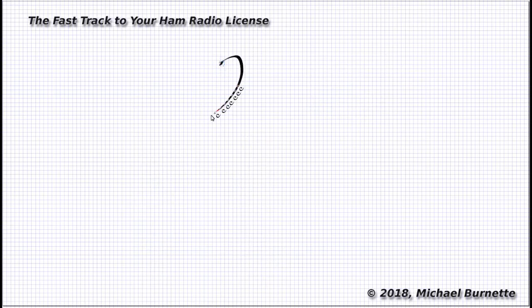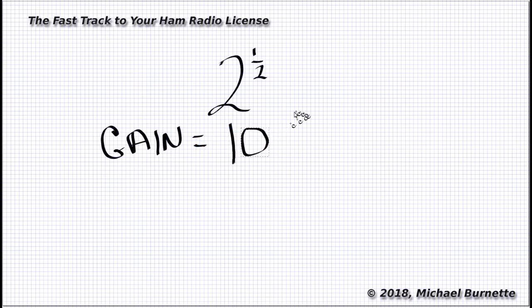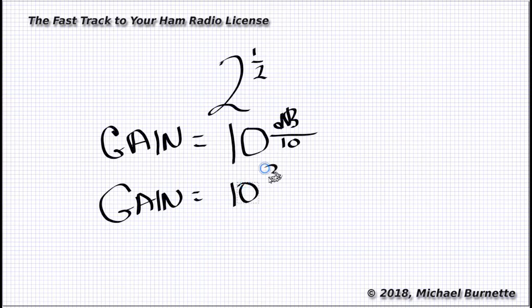Exponents can even be fractions. We often use those when we're working with decibels, for instance. Here's a calculation that shows the gain produced by a 3 dB increase in signal strength. The formula is gain equals 10 raised to the power of the number of dB over 10. In this case, that equals 10 raised to the power of 3 over 10, or 3 tenths, and that comes out to 1.995 times gain.